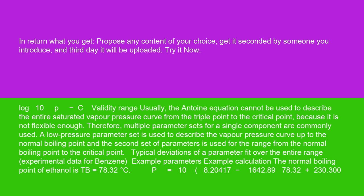A low-pressure parameter set is used to describe the vapor pressure curve up to the normal boiling point, and the second set of parameters is used for the range from the normal boiling point to the critical point. Typical deviations of a parameter fit over the entire range.